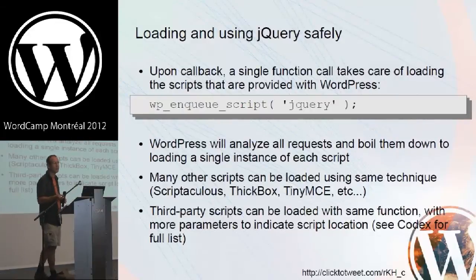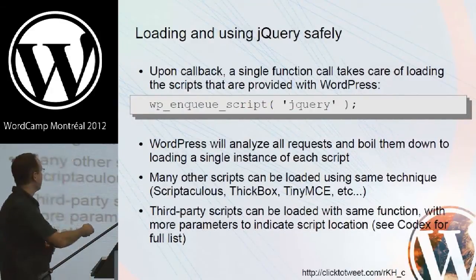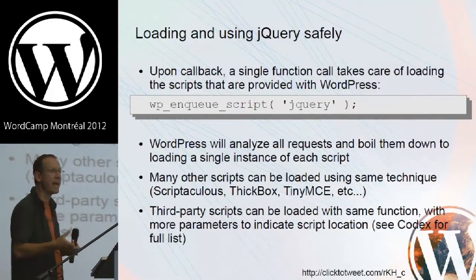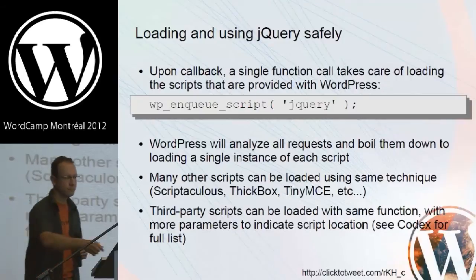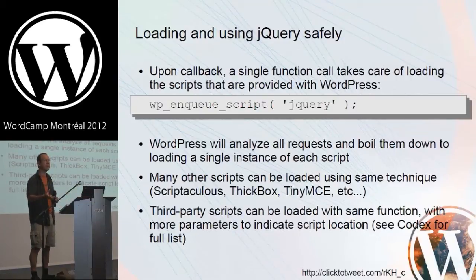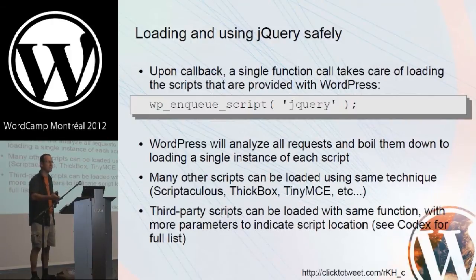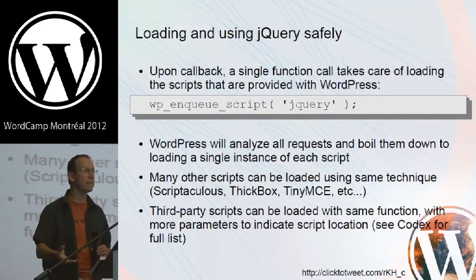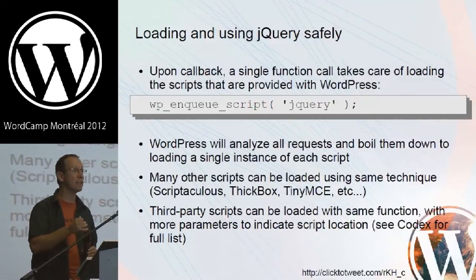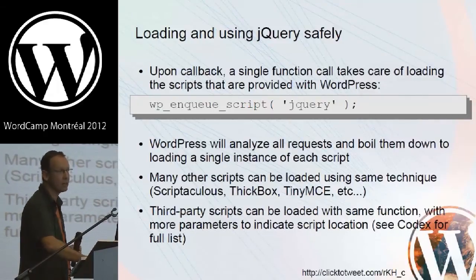There are a lot of other scripts you can load this way — Scriptaculous, Thickbox, TinyMCE, a lot of different JavaScript libraries packaged with WordPress. You just change the name of the library in the function call. If you want to load your own script — a jQuery library you found elsewhere — you use the same wp_enqueue_script function with additional parameters for the script location and version. This way, if another plugin developer is using the same version of some third-party script, only one of them will actually get loaded in the page header, avoiding conflicts.